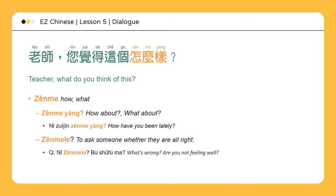你最近怎么样？How have you been lately? 怎么了 is used to ask someone whether they are all right. The 了 here indicates the situation is not as usual. This can be used for either people or circumstances. 你怎么了？不舒服吗？What's wrong? Are you not feeling well?